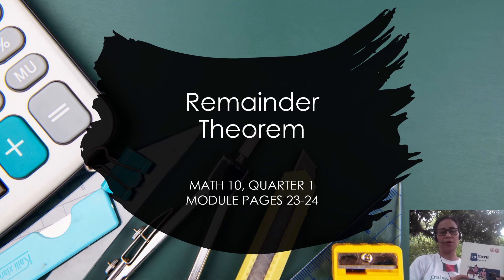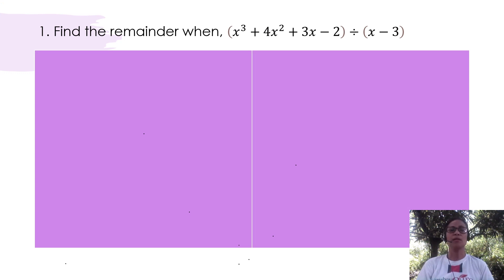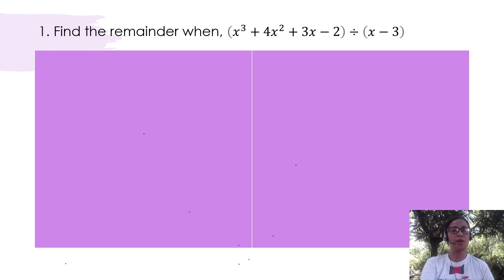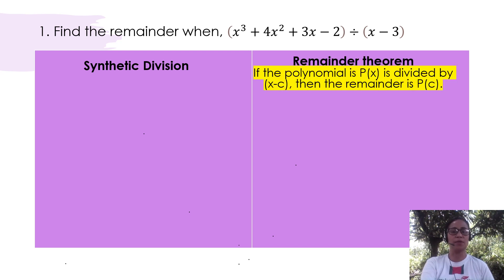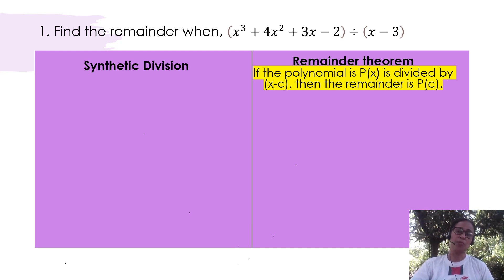So let's have our first example. Find the remainder when x cubed plus 4x squared plus 3x minus 2 is divided by x minus 3. There are two ways in determining the remainder: first is using synthetic division, and second is applying the remainder theorem. Let us first use synthetic division, since this was already taught in my previous video.